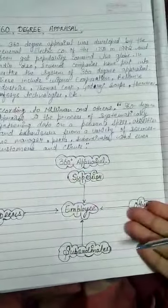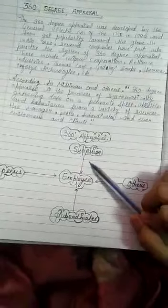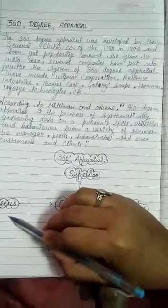Here is a 360 degree appraisal diagram which shows the components: Superior, Self, Subordinates, and Peers.